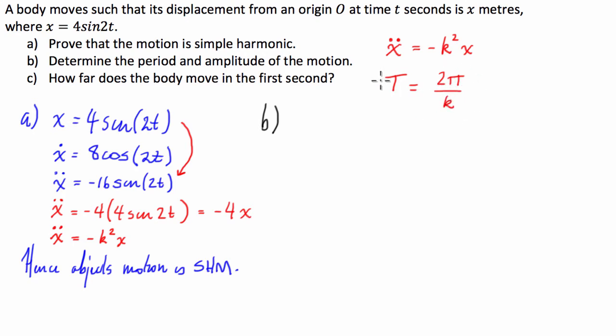And from part A, we know that k is equal to 2. So, we can say that T equals 2 pi on 2, which is equal to pi. Make sure we have our units. Now, the amplitude.